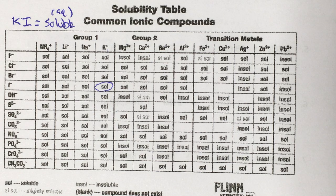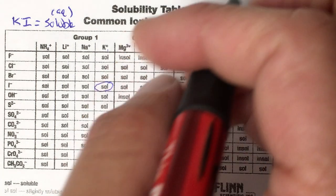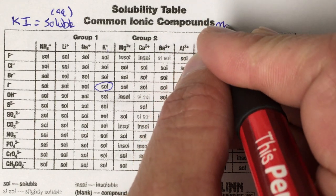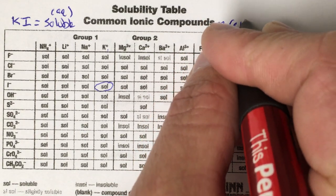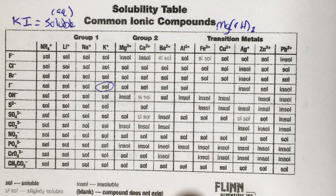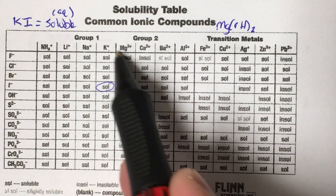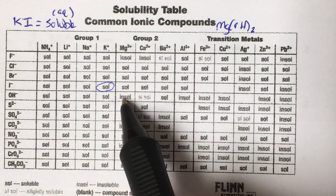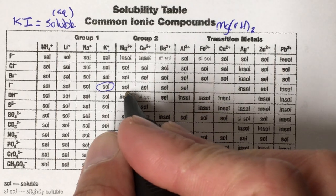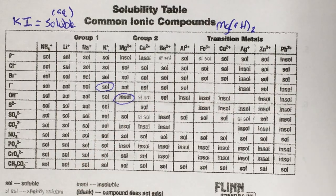Now let's take a look at a different combination. Let's do magnesium and hydroxide, MgOH2. Again, we find magnesium right there. We come down to the hydroxide row. And it says insoluble.